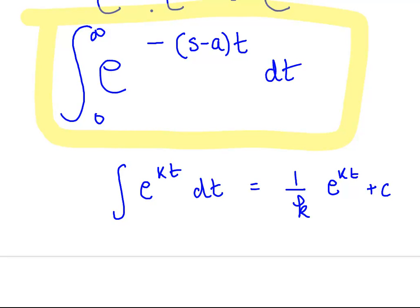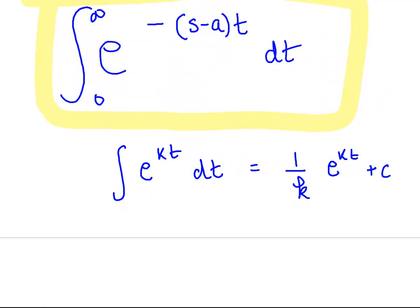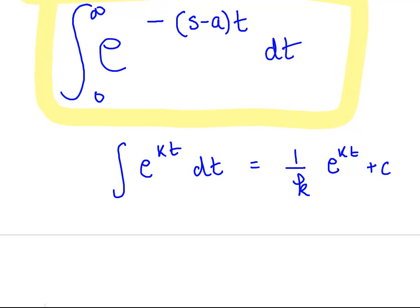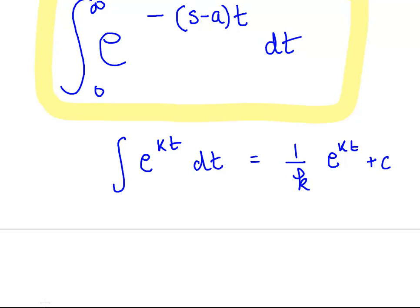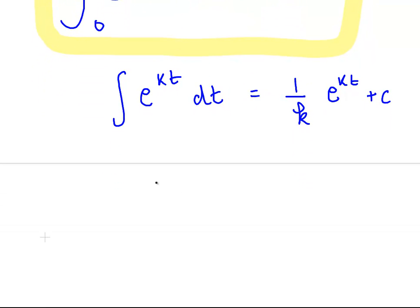For us, k is -(s-a). So we have 1/(-(s-a)) times e^(-(s-a)t). And we evaluate that at infinity and 0.